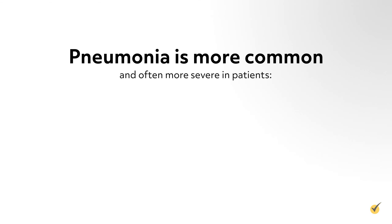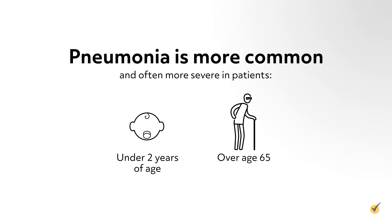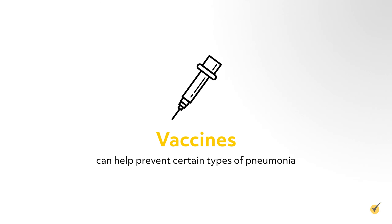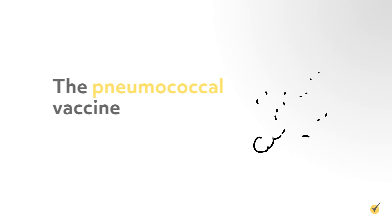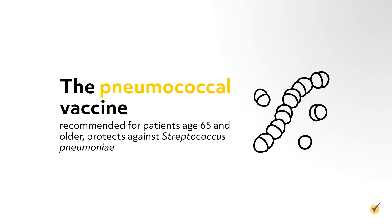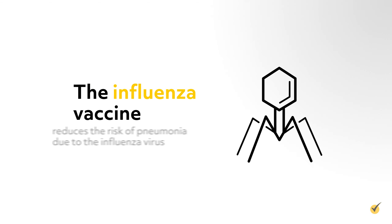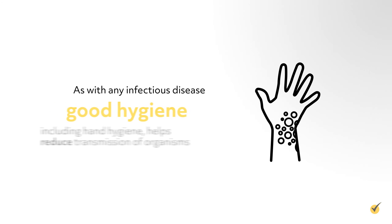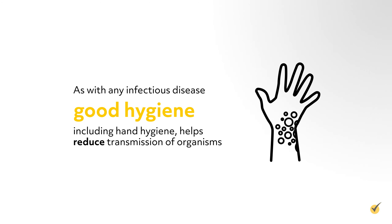Pneumonia is more common and often more severe in patients under 2 years of age or over age 65. Vaccines can help prevent certain types of pneumonia. The pneumococcal vaccine, recommended for patients age 65 and older, protects against Streptococcus pneumoniae. The influenza vaccine reduces the risk of pneumonia due to the influenza virus. Good hygiene, including hand hygiene, helps reduce transmission of organisms.